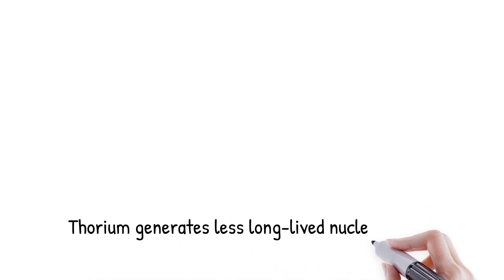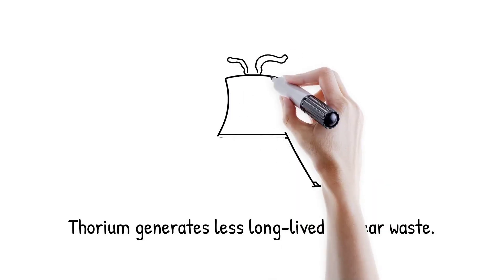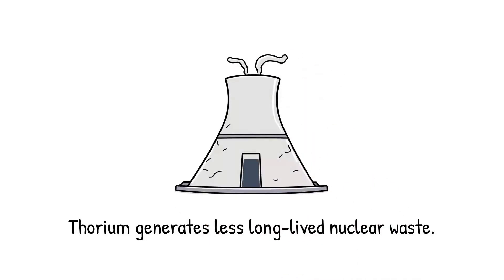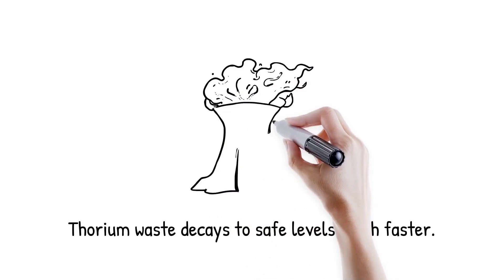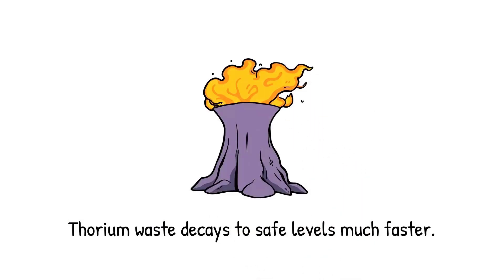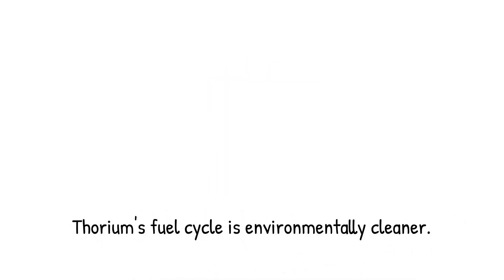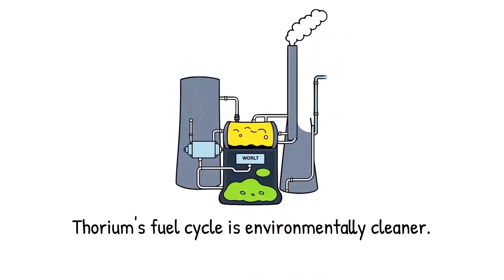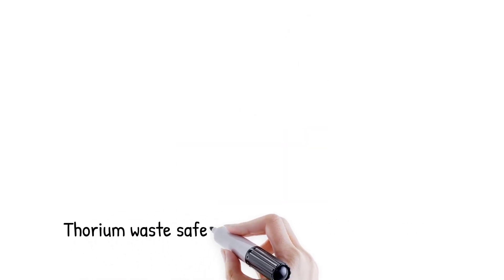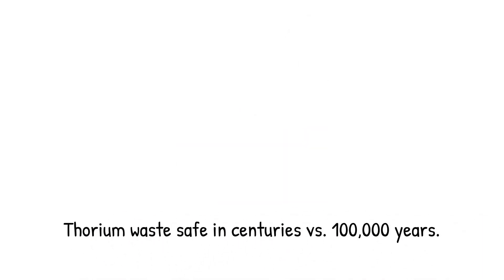Nuclear waste from thorium cycles is shorter lived compared to waste from uranium or plutonium reactors. Thorium produces fewer transuranic elements like plutonium, americium, and curium, which are the most problematic for long-term storage. Most of the waste decays to safe levels within a few hundred years instead of tens of thousands. This makes waste management and geological storage much less challenging. Thorium's clean fuel cycle is one of its strongest environmental advantages. Countries seeking sustainable nuclear energy value this reduced burden of nuclear waste.